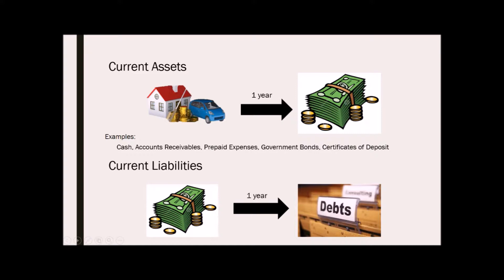Current assets are those assets that are expected to turn into cash within a period of one year. Some examples of this are cash, accounts receivables, prepaid expenses, government bonds, and certificates of deposits. On the other hand, current liabilities are those debts that are expected to be paid or come due within a year. Examples of this are accounts payable and short-term notes payable.